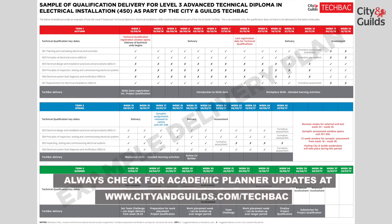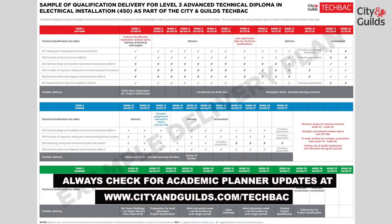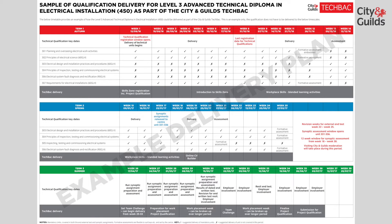The units in the Electrical Technical Diploma are: 301 Planning and Overseeing Electrical Work Activities; 302 Principles of Electrical Science; 303 Electrical Design and Installation Practices and Procedures; 304 Principles of Inspection, Testing and Commissioning Electrical Systems; 305 Inspecting, Testing and Commissioning Electrical Systems; 306 Electrical System Fault Diagnosis and Rectification; 307 Requirements for Electrical Installations.